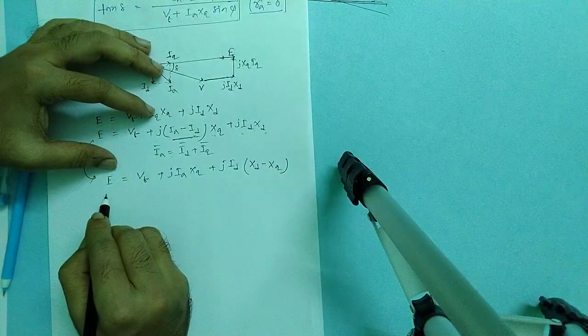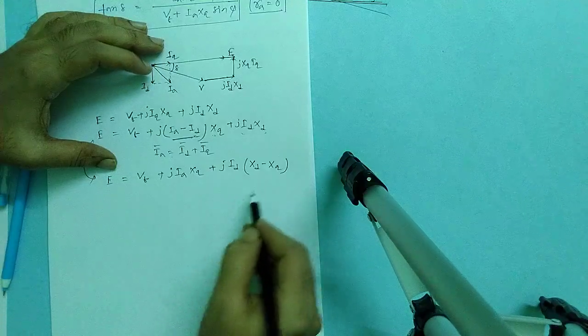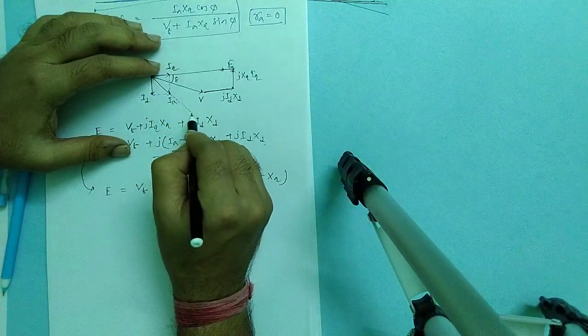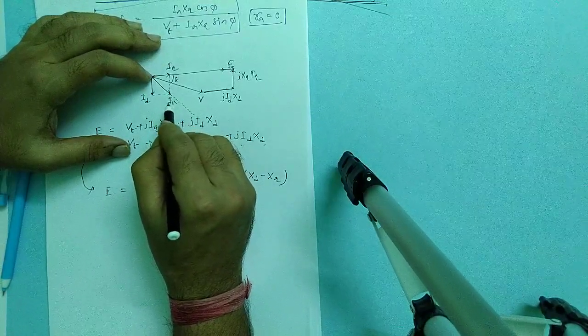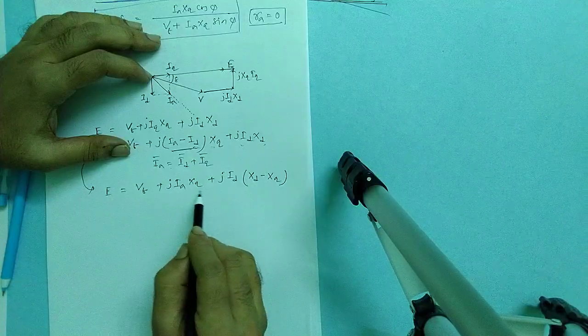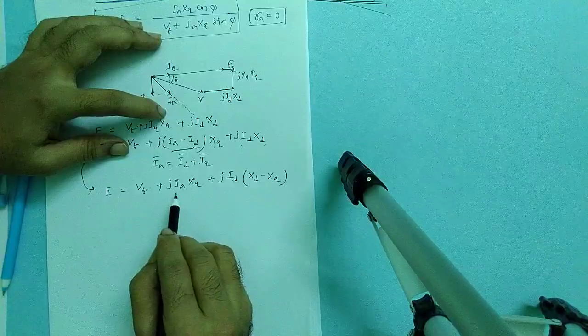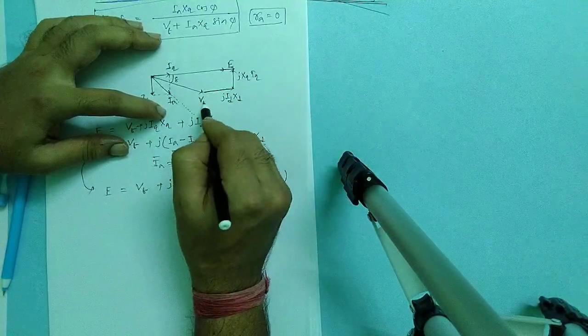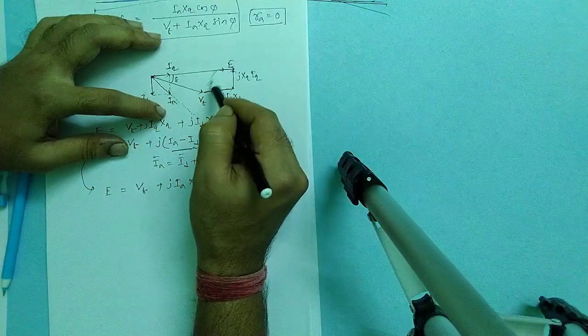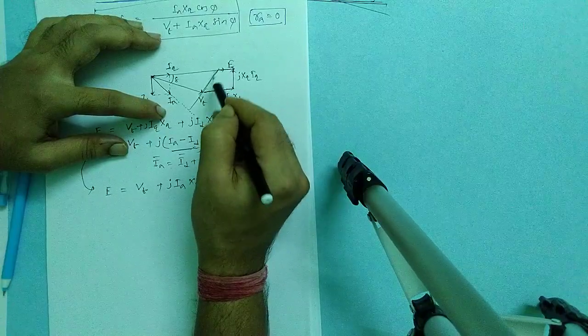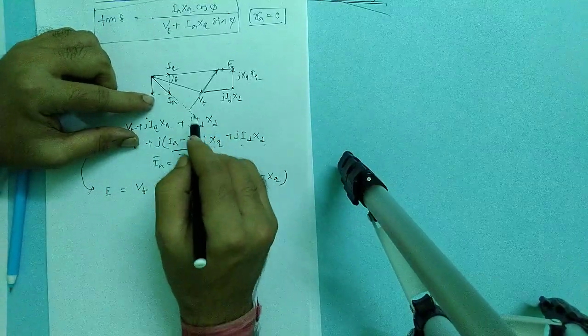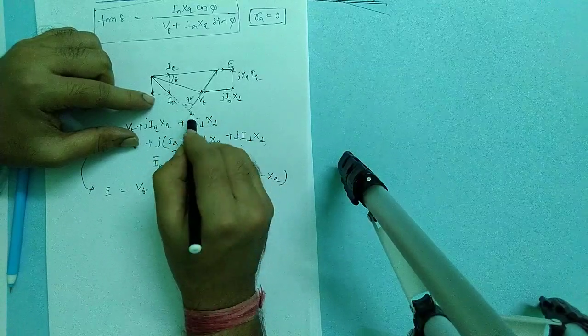Let's see, this is my axis of load current and this is my V_t plus i_a X_q. So here will be i_a X_q. V_t is here, so obviously from here we can draw the i_a X_q which leads the load current i_a by 90 degree.